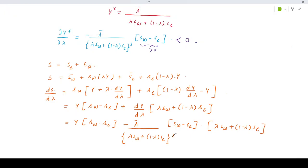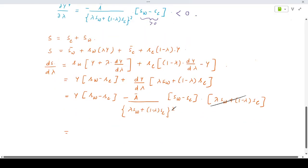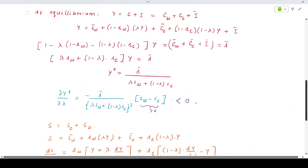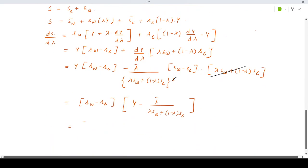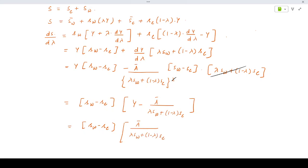One of them will get cancelled. We will have SW minus SC taken common and that would be Y minus A bar divided by lambda SW plus 1 minus lambda SC. If you replace again the optimal value of Y, that is again A bar divided by lambda SW plus 1 minus lambda SC, then it will again become 0.